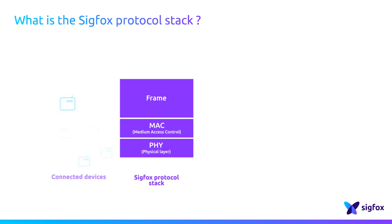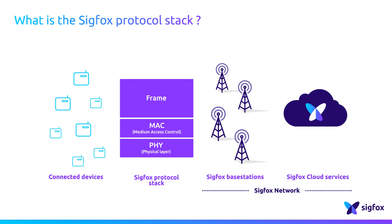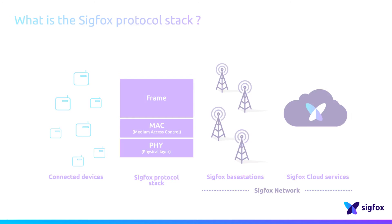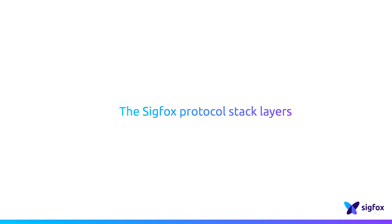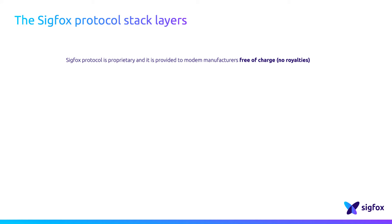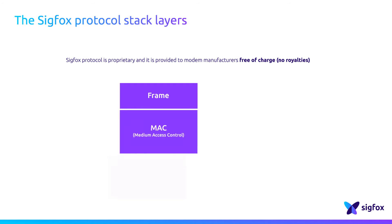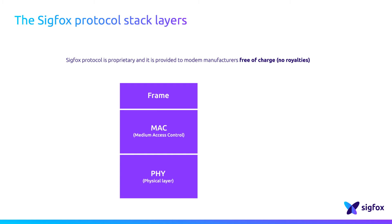The SIGFOX protocol stack is located between the connected device and the SIGFOX network. It is embedded in connected devices to enable radio frame modulation and emission to transmit the message. The SIGFOX protocol stack is provided free of charge to modem manufacturers, and it is embedded in millions of chipsets, system-on-chips, or modules.